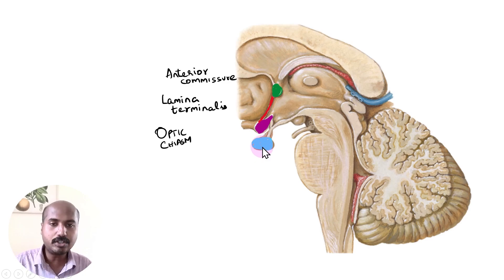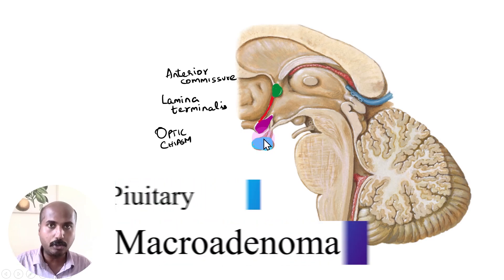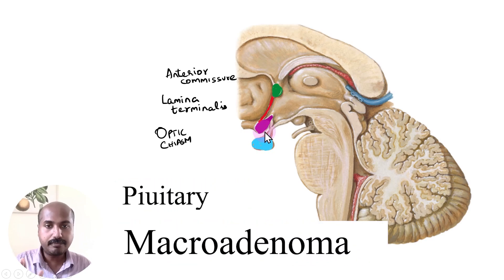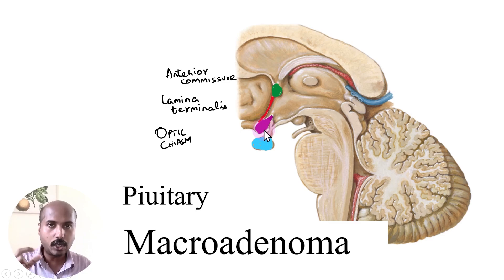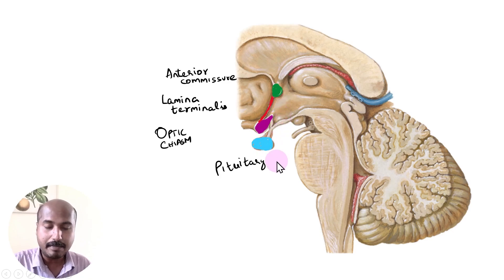This structure is the pituitary gland, and an important relation to note is that the pituitary gland lies just inferior to the optic chiasma. This is clinically very important because tumors in this sellar region — such as a pituitary macroadenoma — if they enlarge upwards, can compress the center of the optic chiasma and cause bitemporal hemianopia. This anatomical relation is therefore very important.